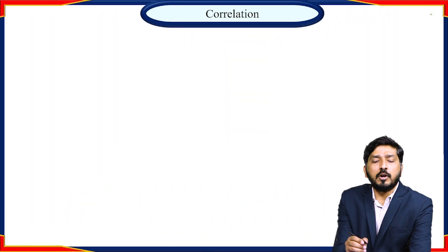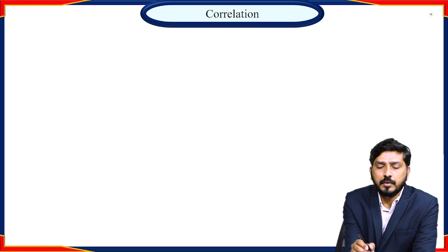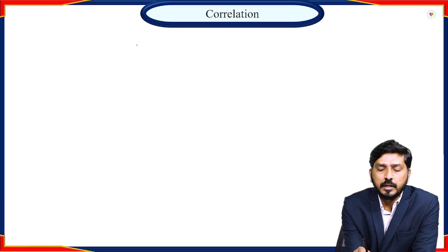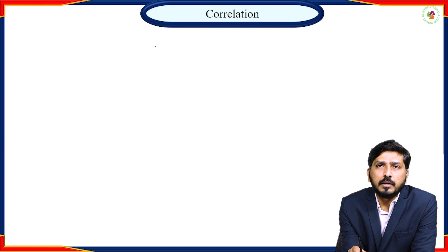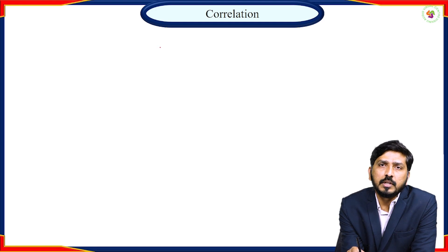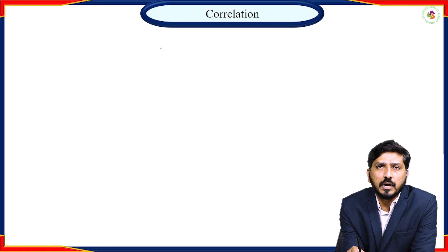Before entering into the topic, what is correlation? Correlation is used to find the degree of similarity between two signals. The two signals could be of same type or different type. And based on the types of signals, correlation is divided into two types: autocorrelation and cross-correlation.